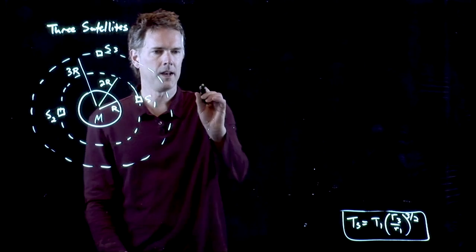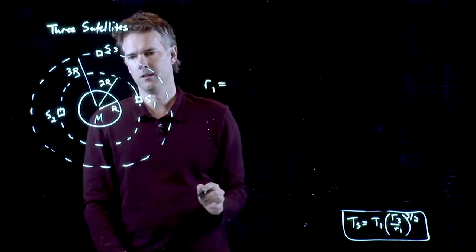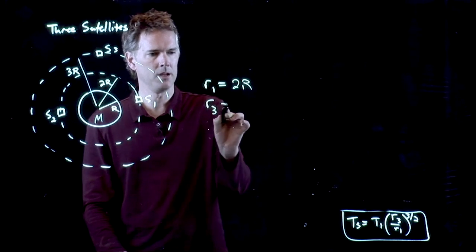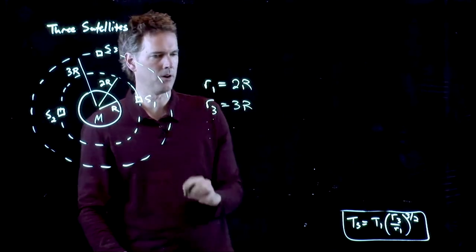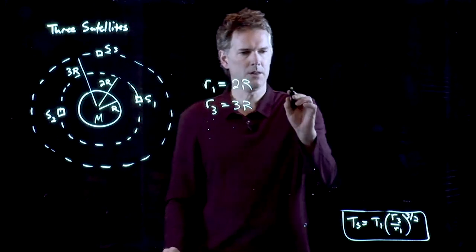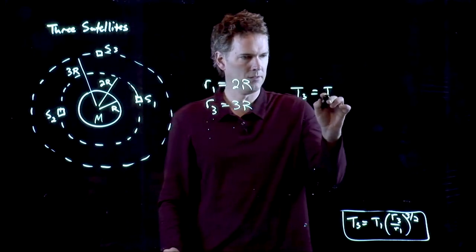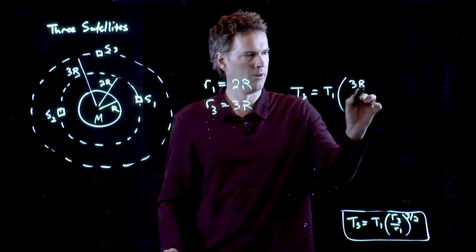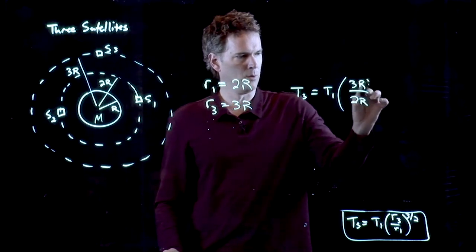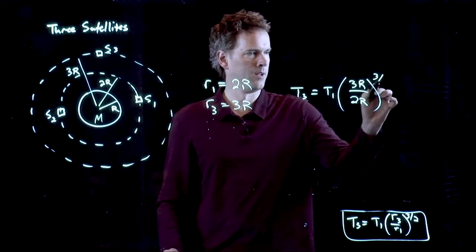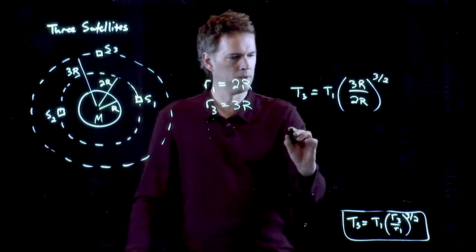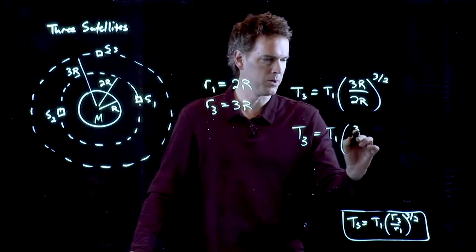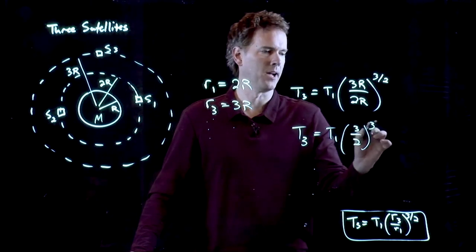What we said here was R1 was equal to 2R. R3 was equal to 3R. So T3 is T1 times 3R/2R to the 3 halves. The R's cancel out and we get 3 halves to the 3 halves.